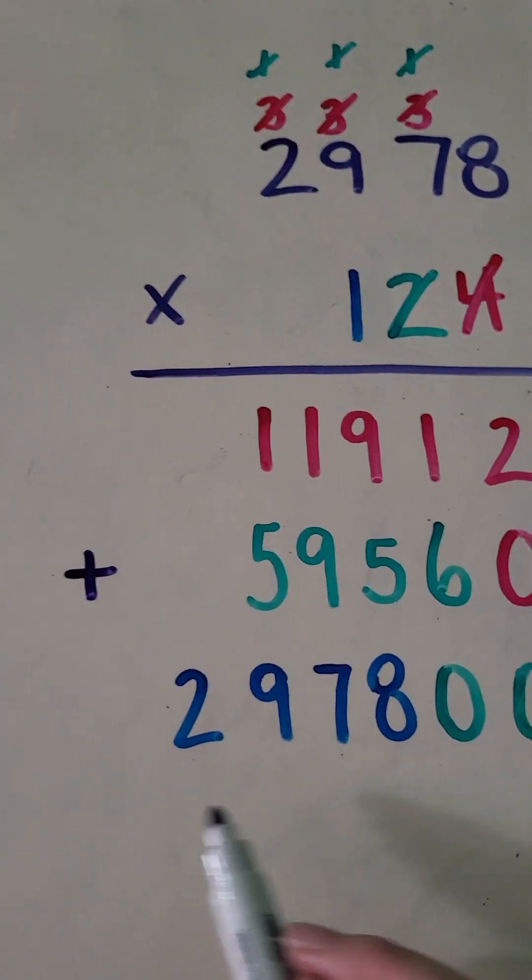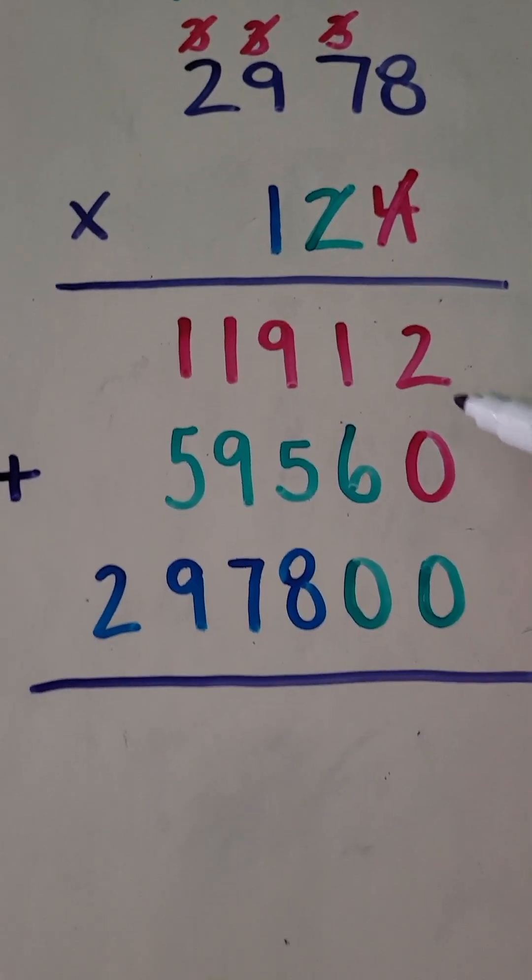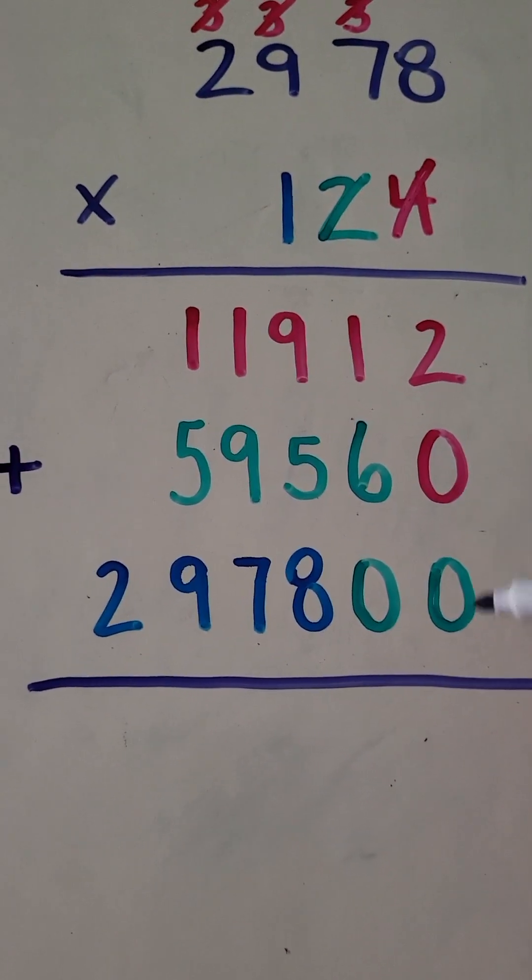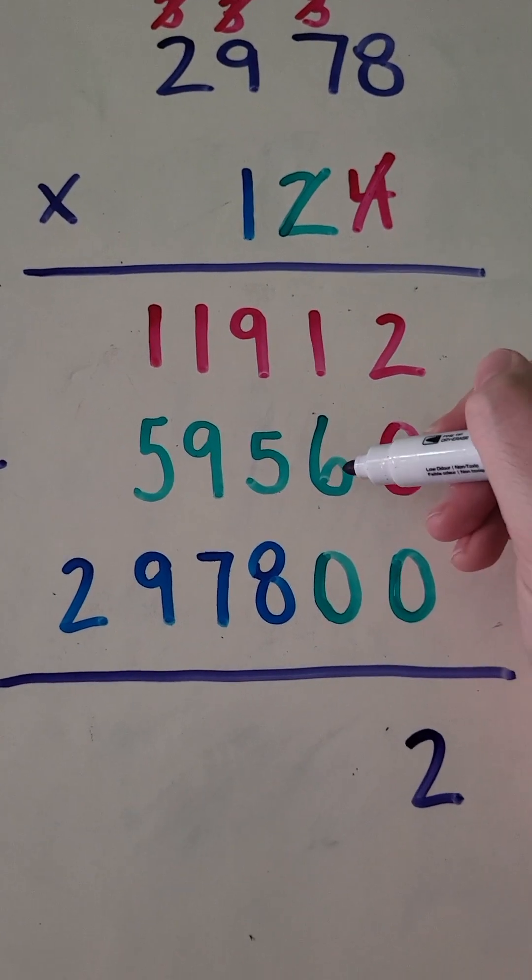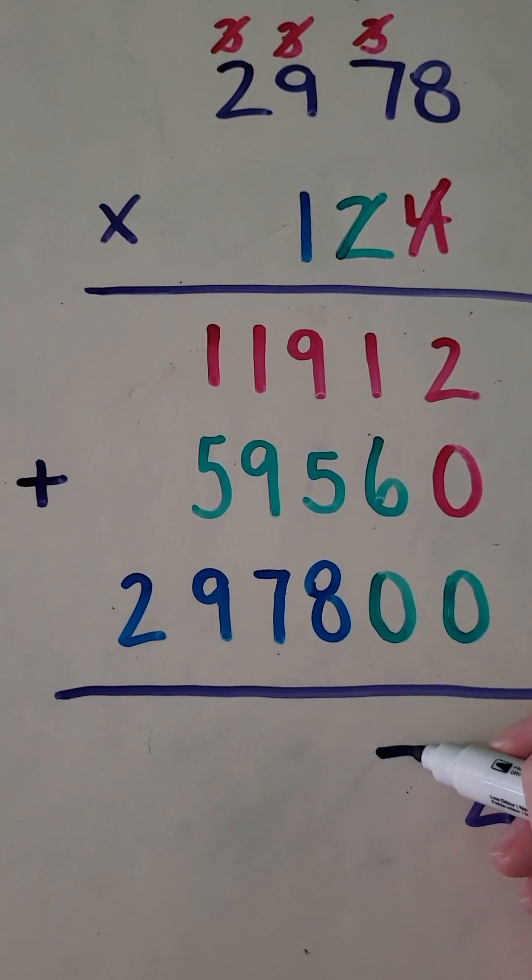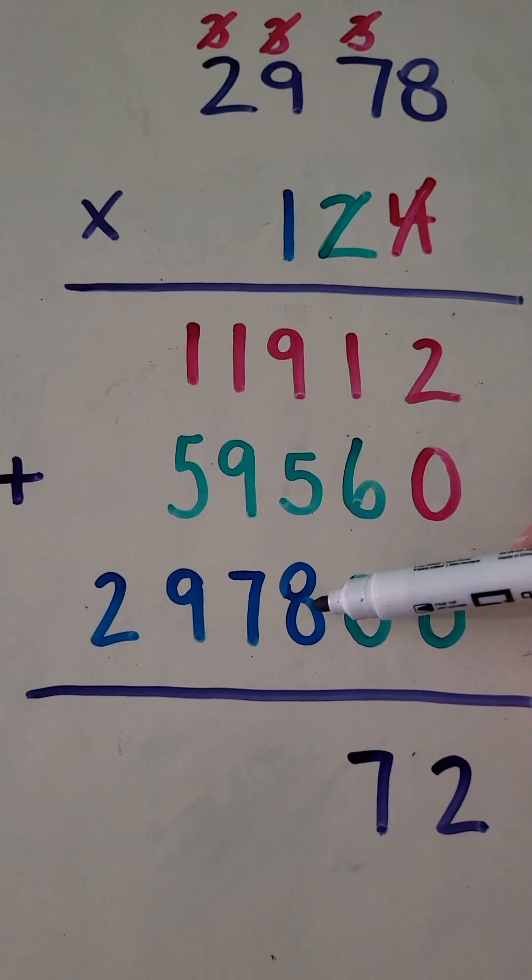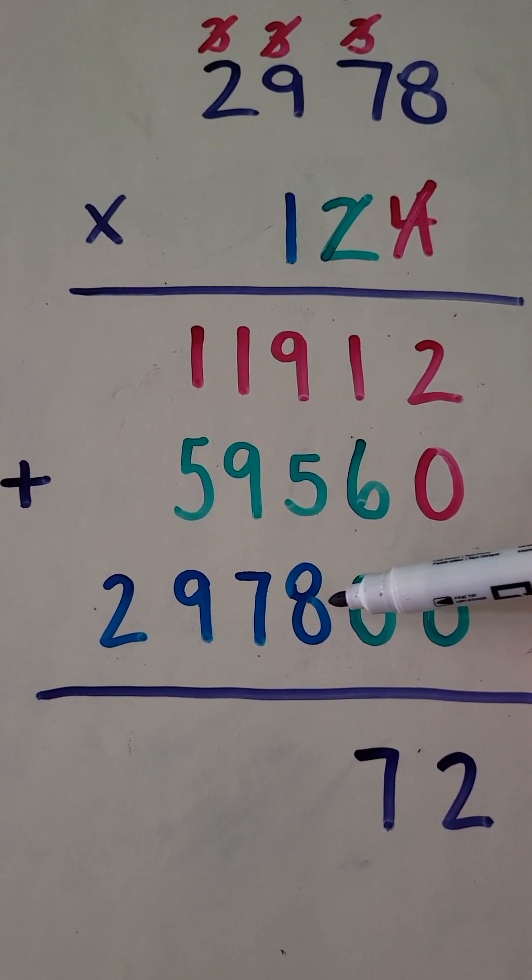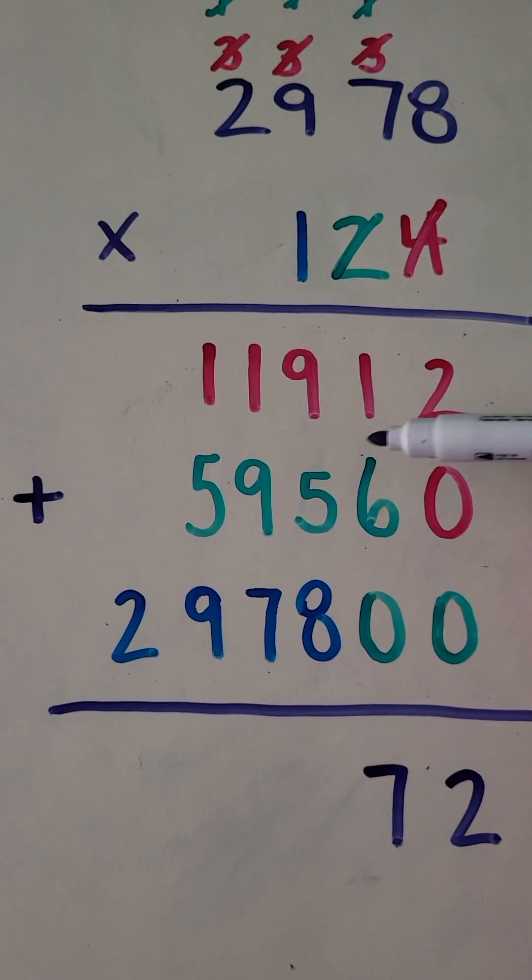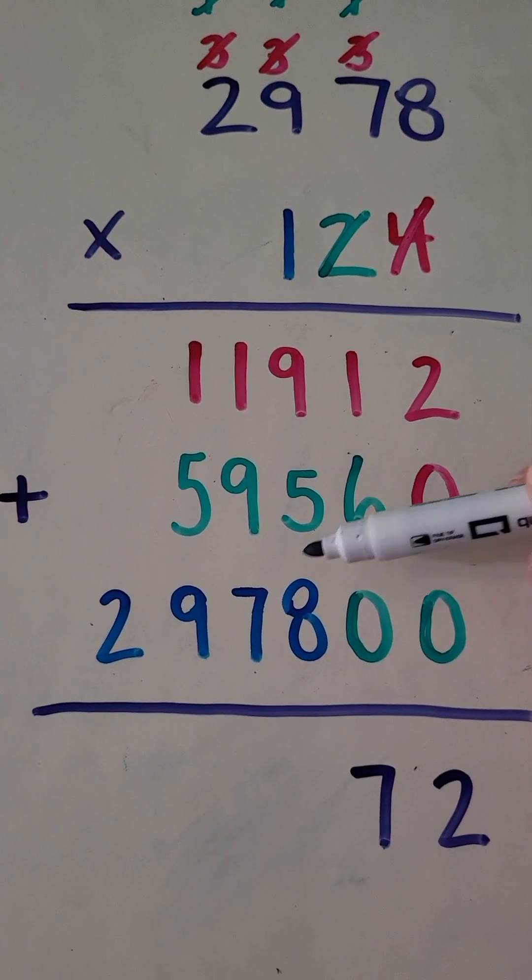All right. Now, same as usual, we're going to add this all together. All right. So 2 plus 0 plus 0 is 2. 6 plus 1 is 7. All right. So I have, let's see, 9. Well, I know 9 plus 9 is 18. Well, this is 17. 18, 19, 20, 21, 22.